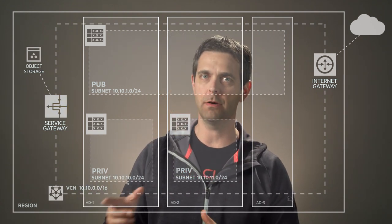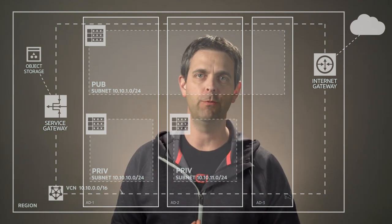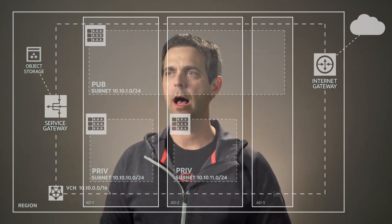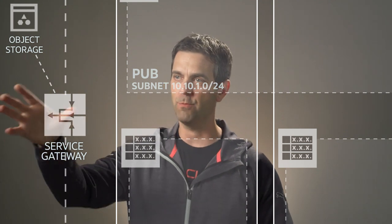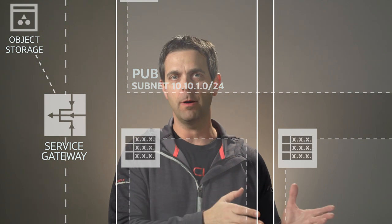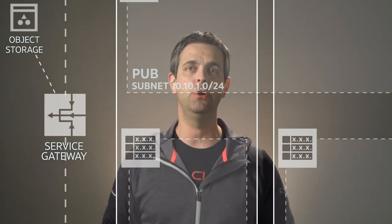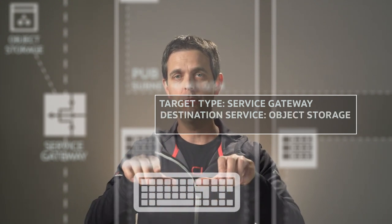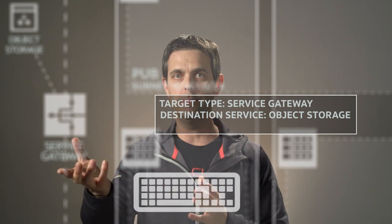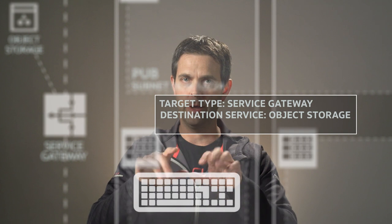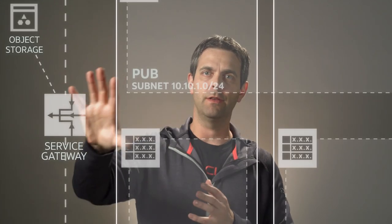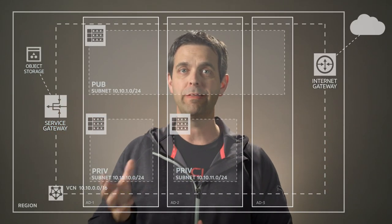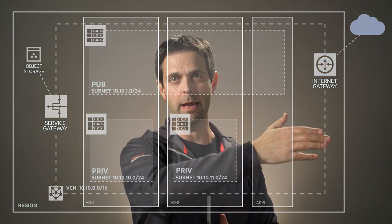Let's take a look at the service gateway, and what we would do if we needed to communicate from our private subnets out to something like object storage. We'll zoom in on the service gateway and the route table, and we're going to add a route rule that allows us to communicate from our private subnets to a service endpoint as opposed to a destination CIDR. The destination here is a service instead of a CIDR. The destination service is OCI object storage, and we're going to define the gateway as the service gateway we created earlier. We now have our three configuration points — we'll put that in the route table and zoom back out to our full diagram.